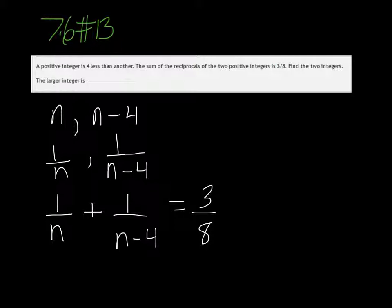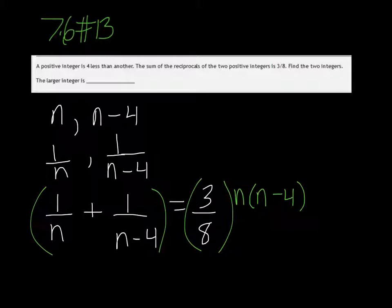So we need to multiply both sides of the equation by the LCD, which is n times n minus 4. So we're going to distribute that in. This one already has an n, so it's just left with an n minus 4. This one has the n minus 4, so it just needs an n.